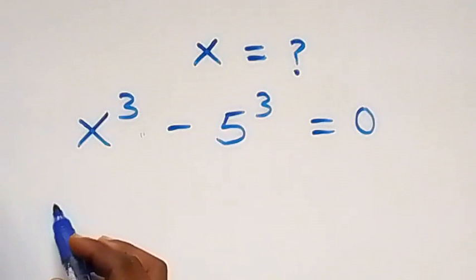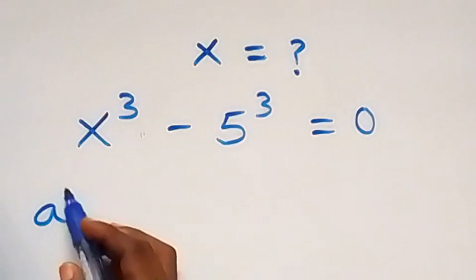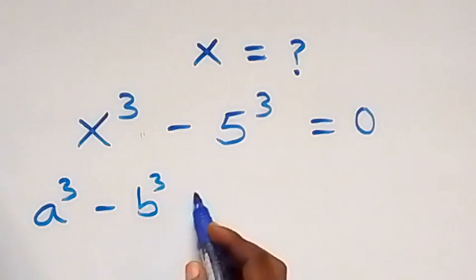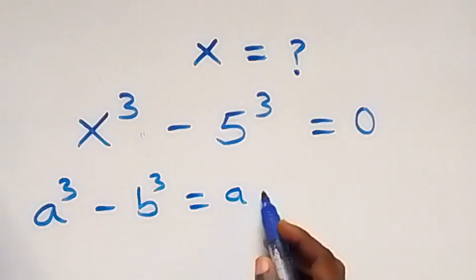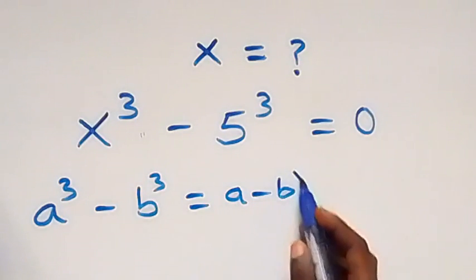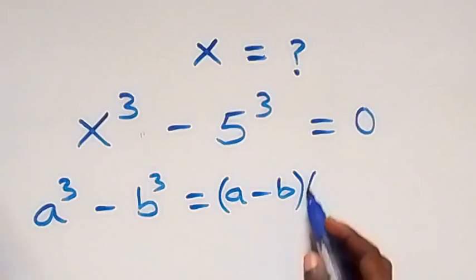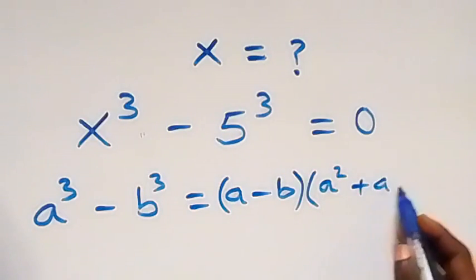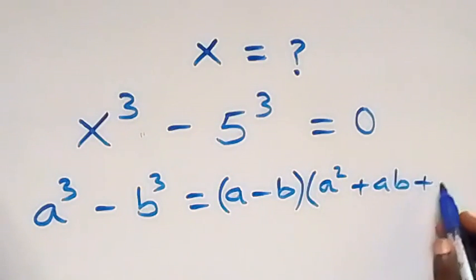This follows from difference of two cubes. When we have a cubed minus b cubed, this is the same thing as a minus b, then multiply by a squared plus ab plus b squared.